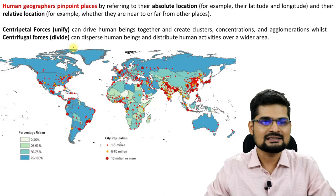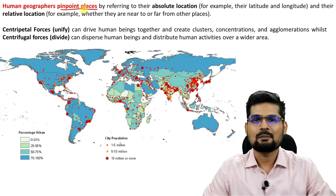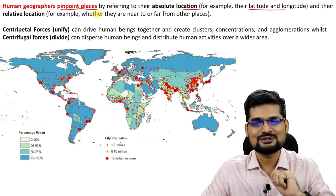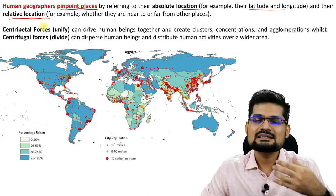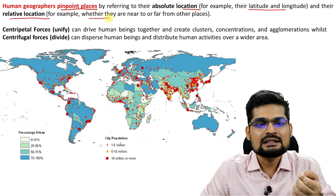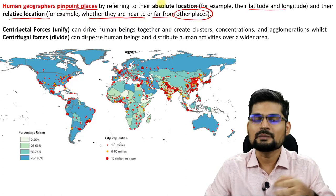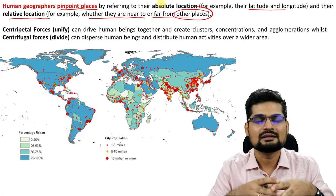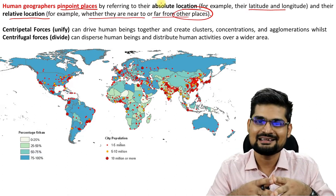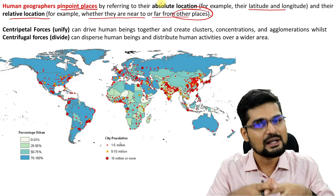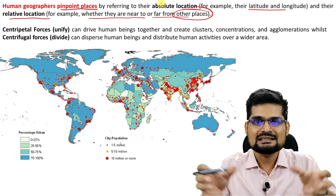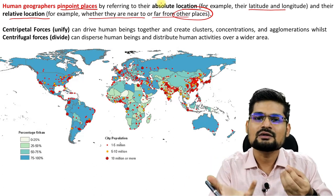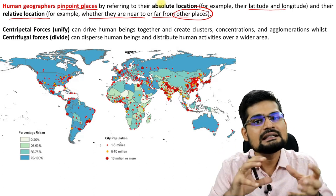Human geographers pinpoint places by referring to their absolute location — latitude and longitude — while also doing relative locational analysis: whether places are near or far to some particular place. For example, whether a human settlement is situated close to the sea or is inland. That is the concept of continentality. Continentality also determines land use pattern — if it is close to the sea, it is a coastal area with a different land use pattern and different structure on the physical level.